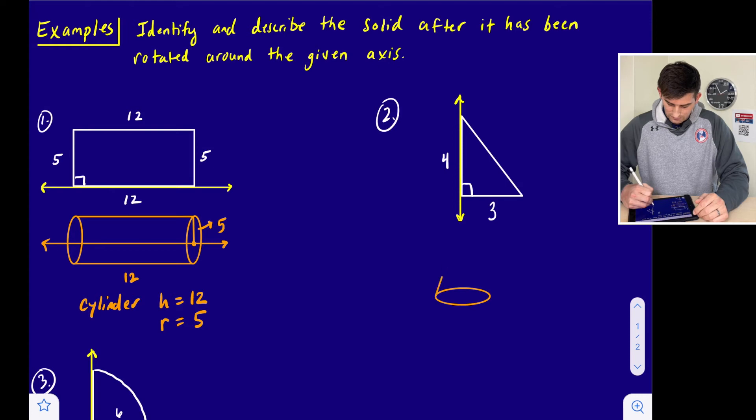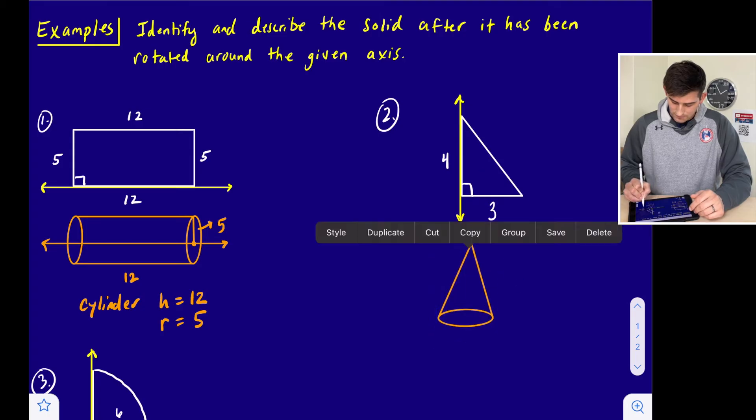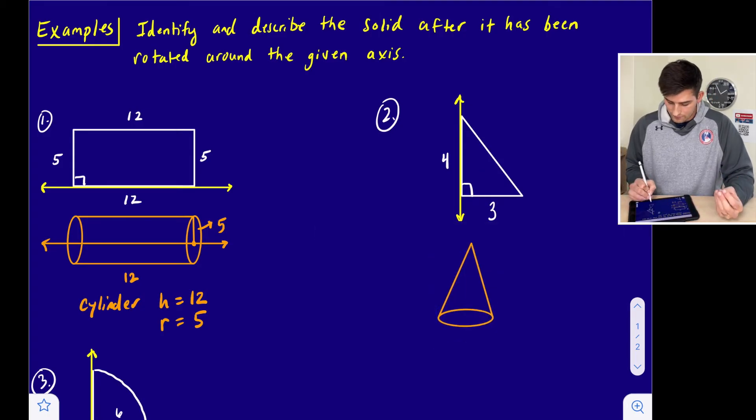So it would look something like this. I know it might be a little bit smaller than what we've drawn. We'll go ahead and move that down just a little bit. All right. And now once again, we're going to label the information that we have. If we had our center point there, this would be our radius, and that would be three, and we would have a height of four.